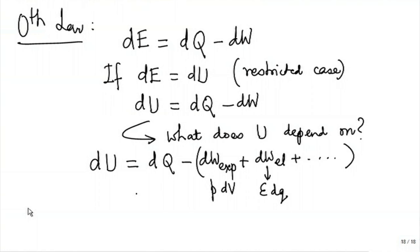But it turns out that without doing any work — with all work interactions set to zero — you can still change the internal energy of a system by having a heat-type interaction. So that means, apart from V and charge, U is a function of some other property. What is that property? That is one question.